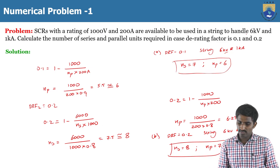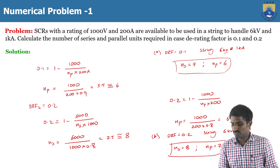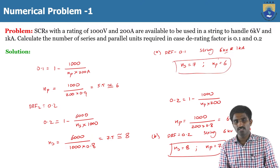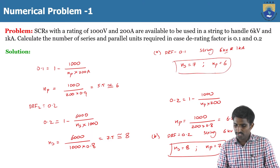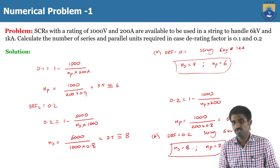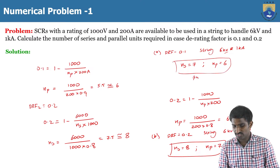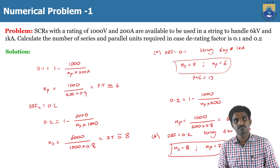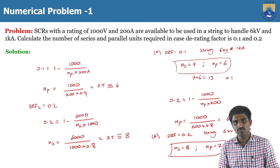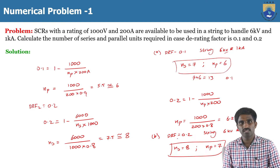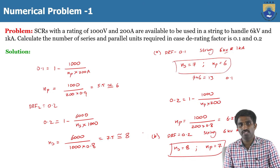Comparing the two cases: for the same string rating but different derating factors, the required number of thyristors changes. For DRF = 0.1, total thyristors = 7 + 6 = 13. For DRF = 0.2, total thyristors = 8 + 7 = 15. When increasing the derating factor, the number of thyristors required in a particular string also increases.